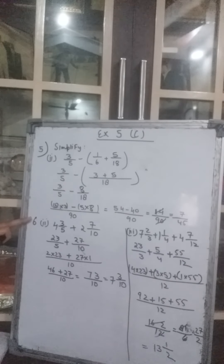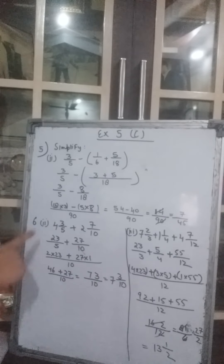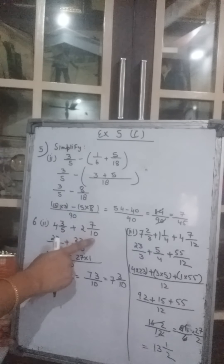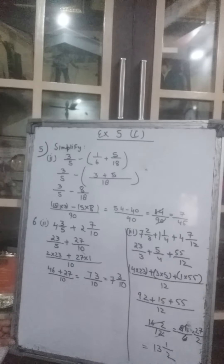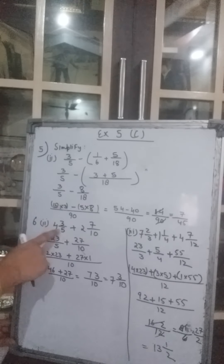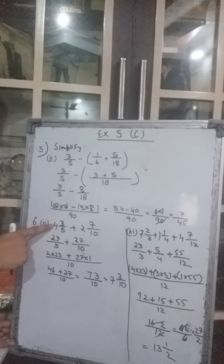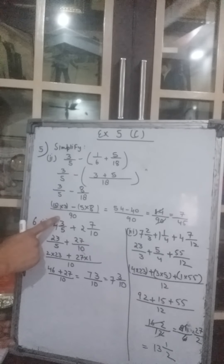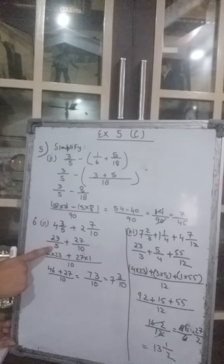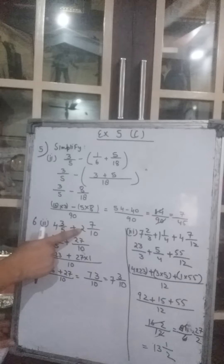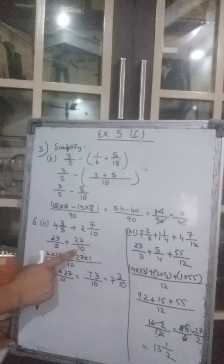Let's do the 6th question — again it is a simplification. We will do the 2nd and 3rd parts. The 2nd part says 4 whole 3 upon 5 plus 2 whole 7 upon 10. Whenever mixed fractions are given, first convert them into improper fractions. This 5 will be multiplied by 4: 5 4s are 20, and the top one added: 20 plus 3 gives you 23 upon 5. Plus 10 2s are 20 plus 7: 27 upon 10.